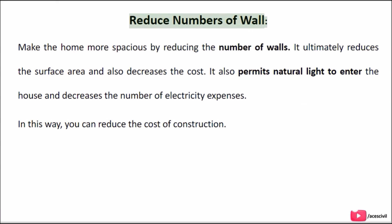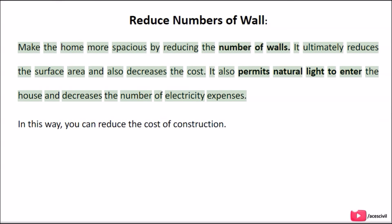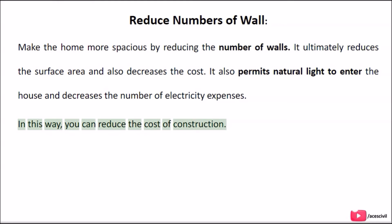The seventeenth tip is to reduce the number of walls. Make the home more spacious by reducing the number of walls, which ultimately reduces surface area and also decreases cost. It also permits natural light to enter the house and decreases electricity expenses. In this way, you can reduce the cost of construction.